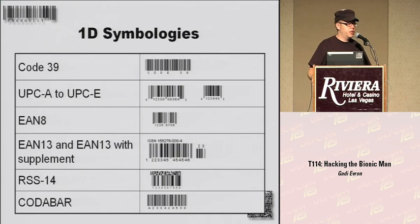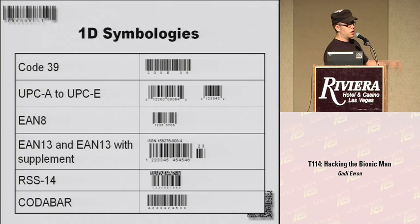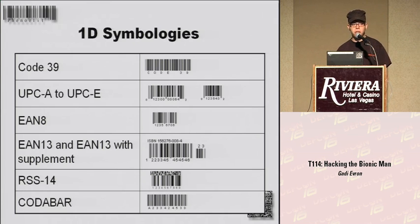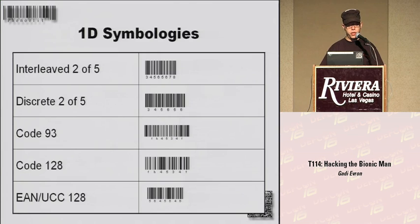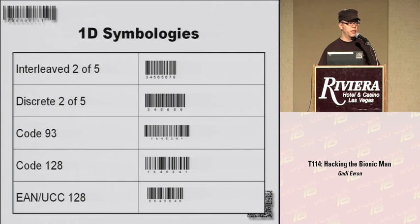In barcode speech, the things we just call barcodes are called symbologies. We have one-dimensional symbologies and two-dimensional symbologies. Looking at some samples, the smarter ones will notice that some contain only numbers, while some actually contain letters — so we can have letters in barcodes. There are many different symbology standards out there.